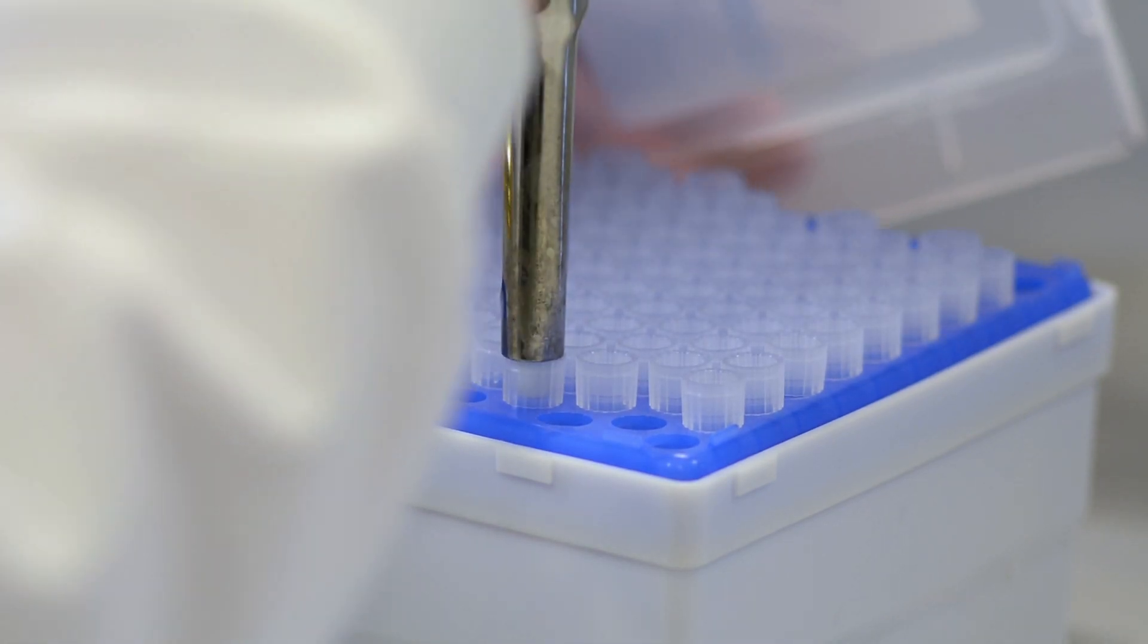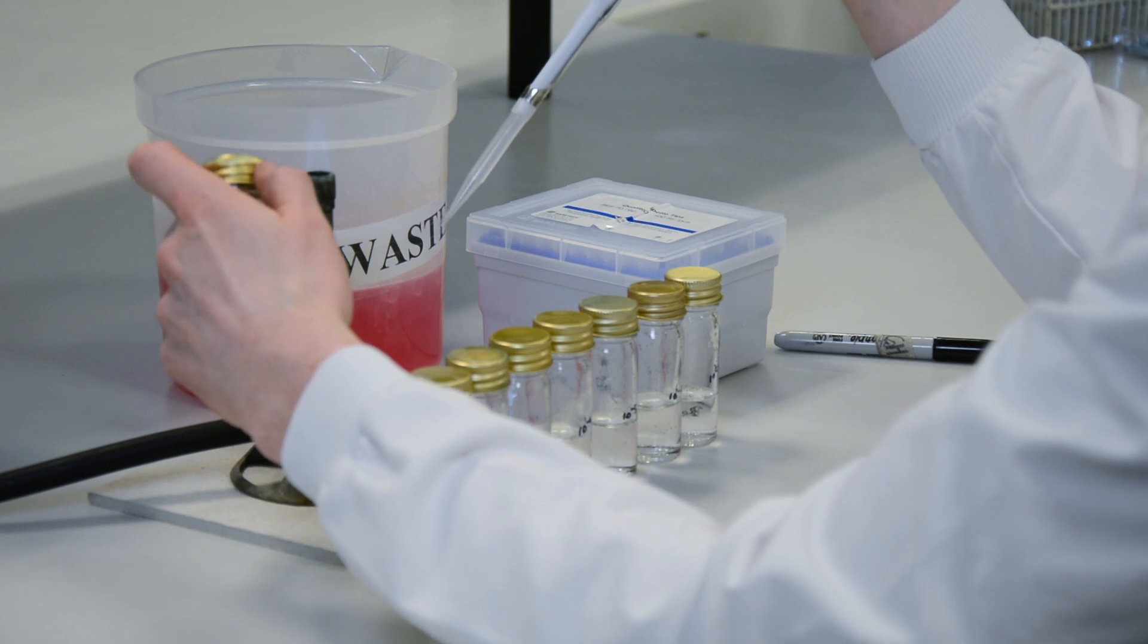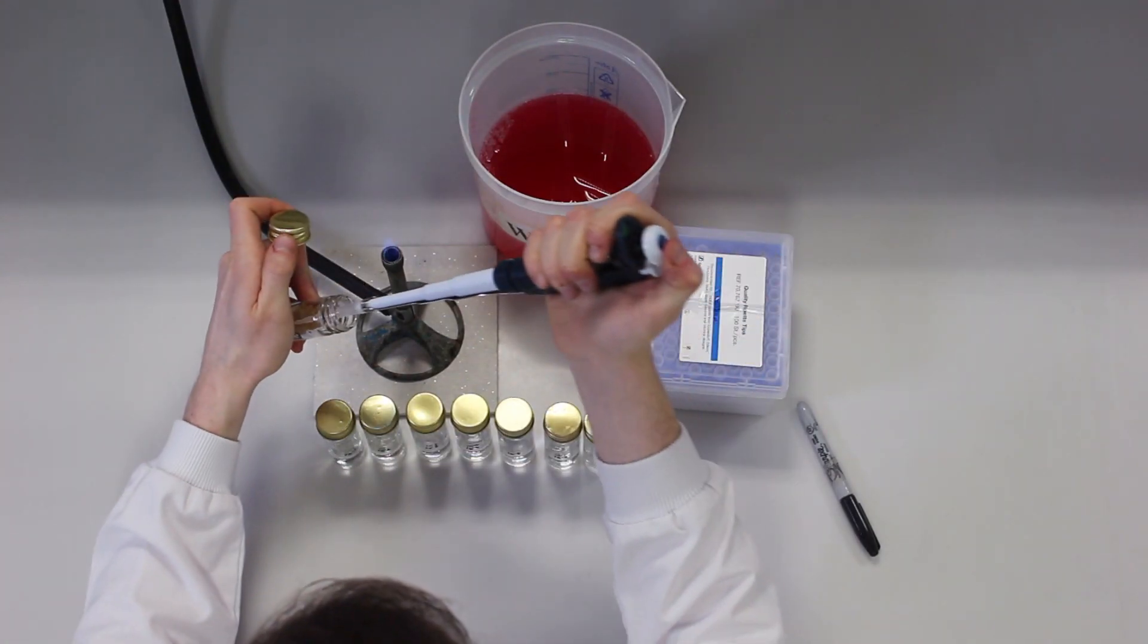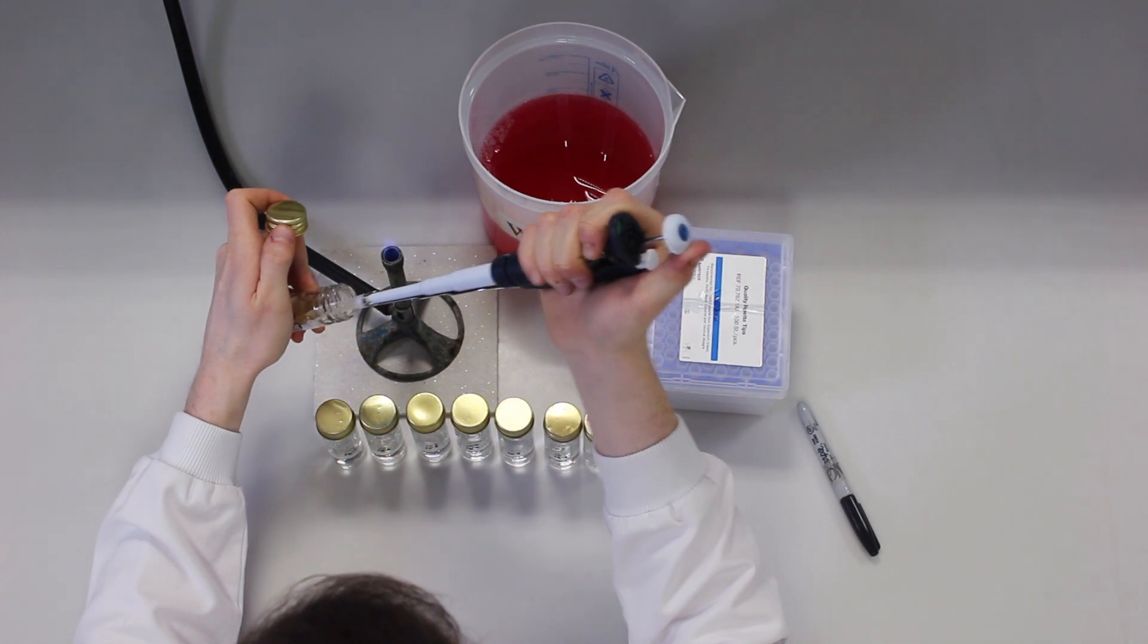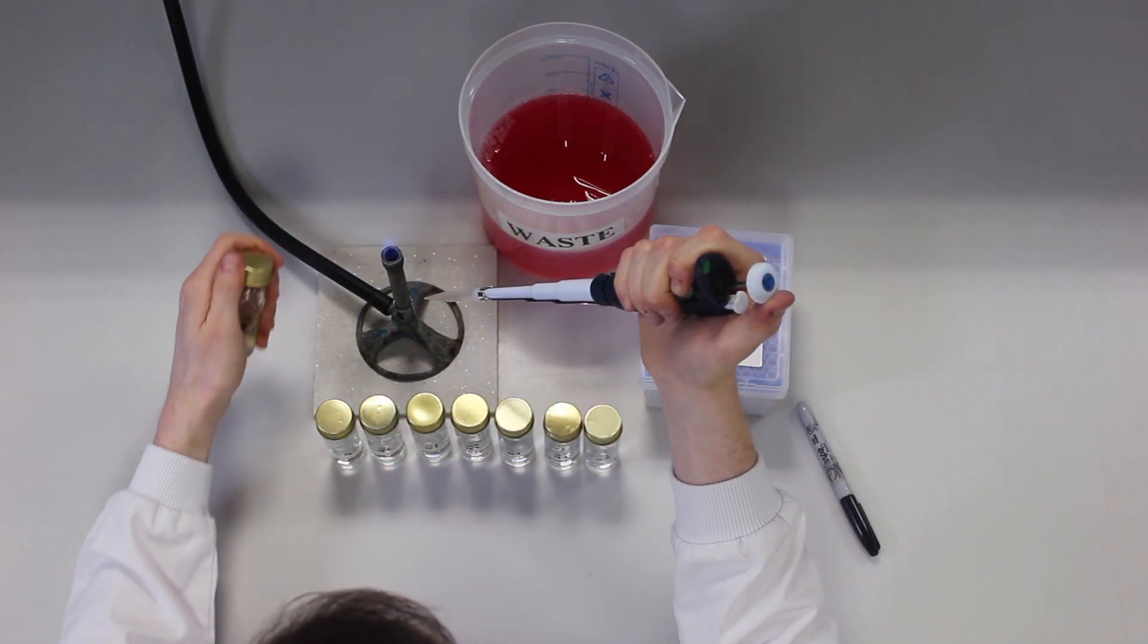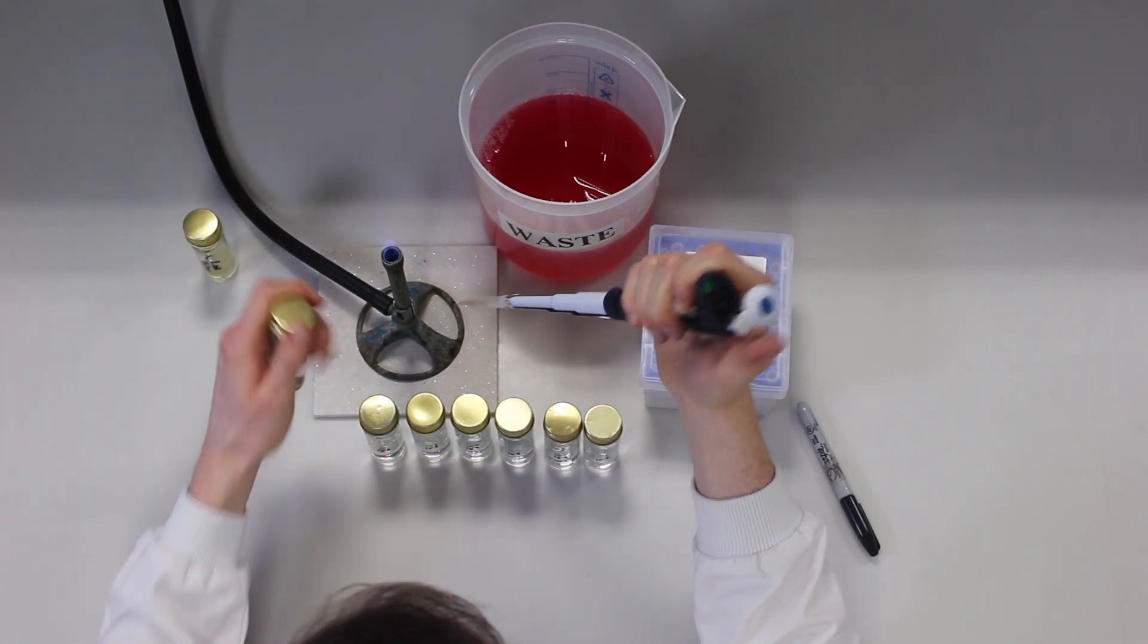Here, I have a broth culture of E.coli. Using aseptic technique we remove the lid, flame the neck of the bottle and withdraw 1 ml or 1,000 microliters of the culture using an automatic pipette and sterile pipette tip. Flame the neck of the bottle again and replace the lid.